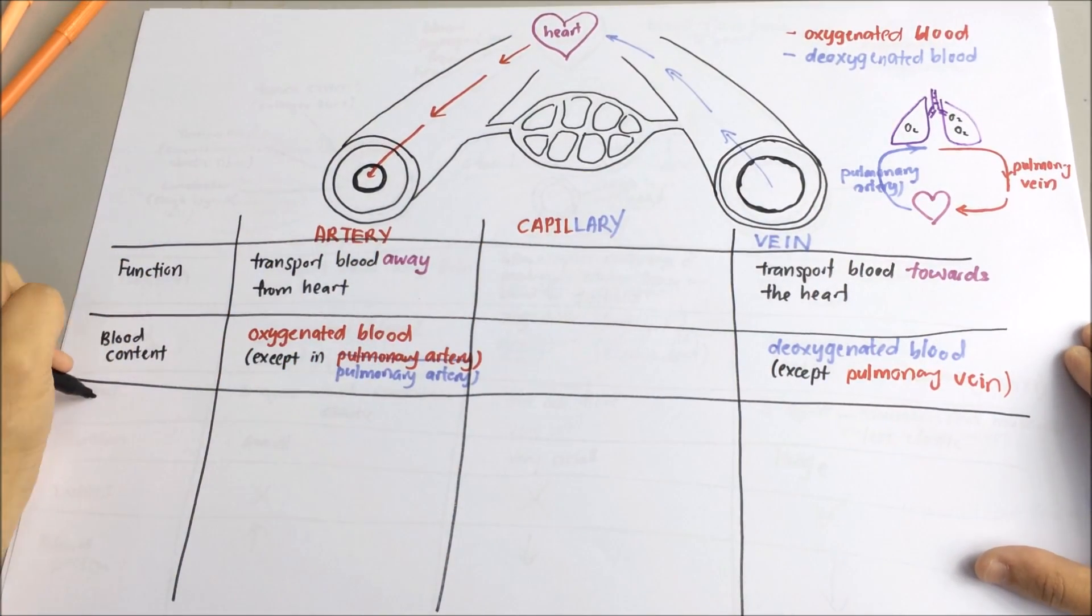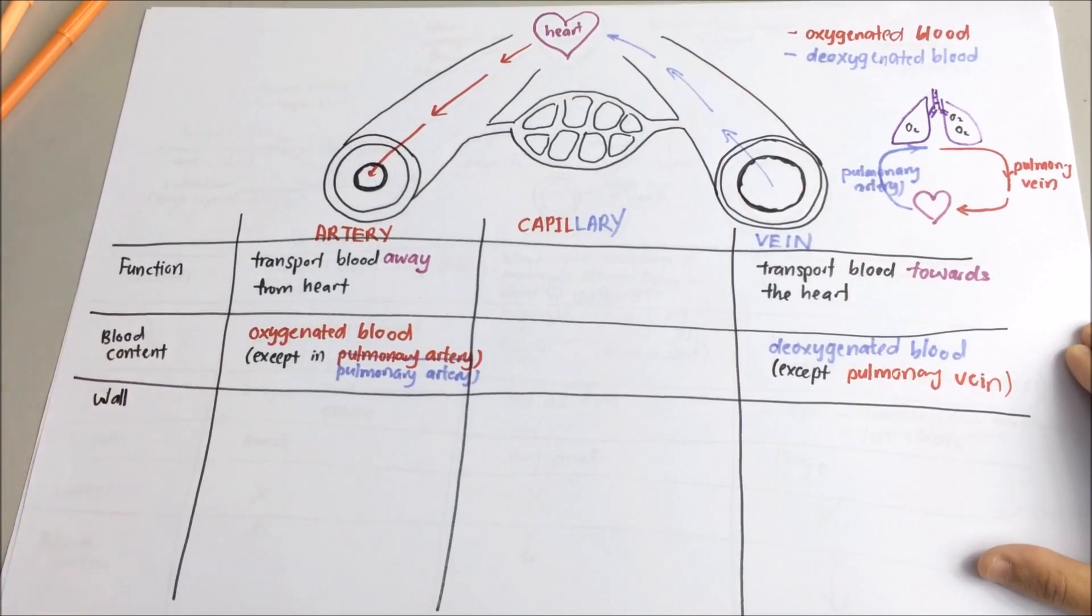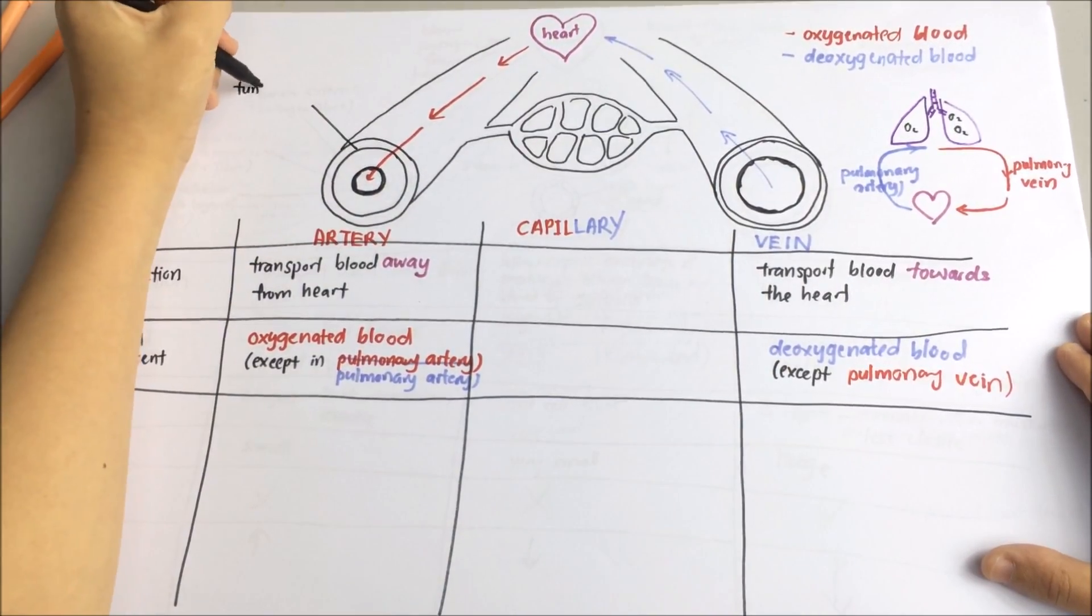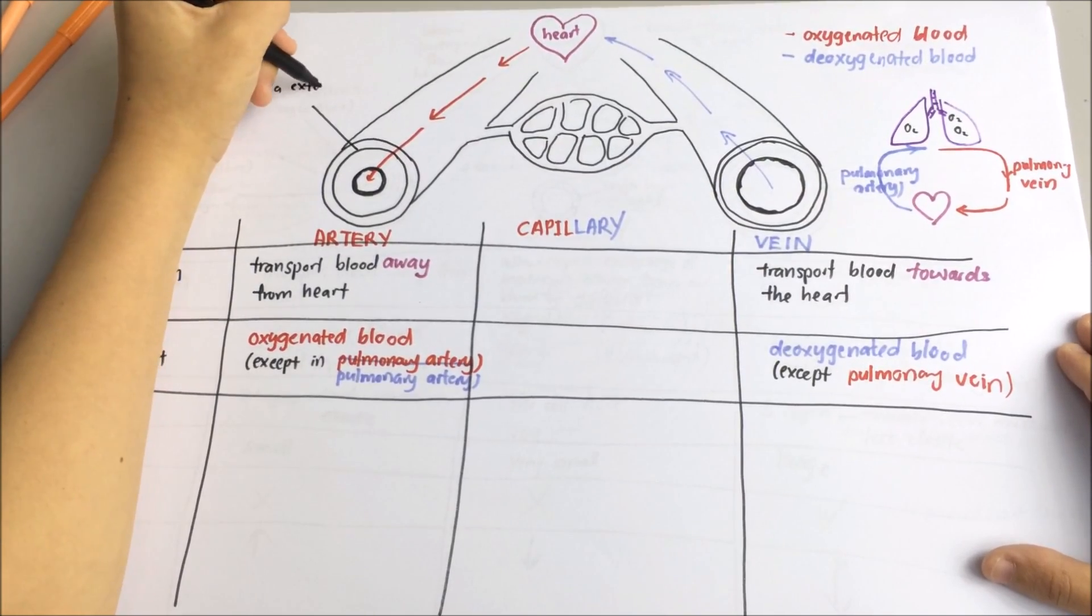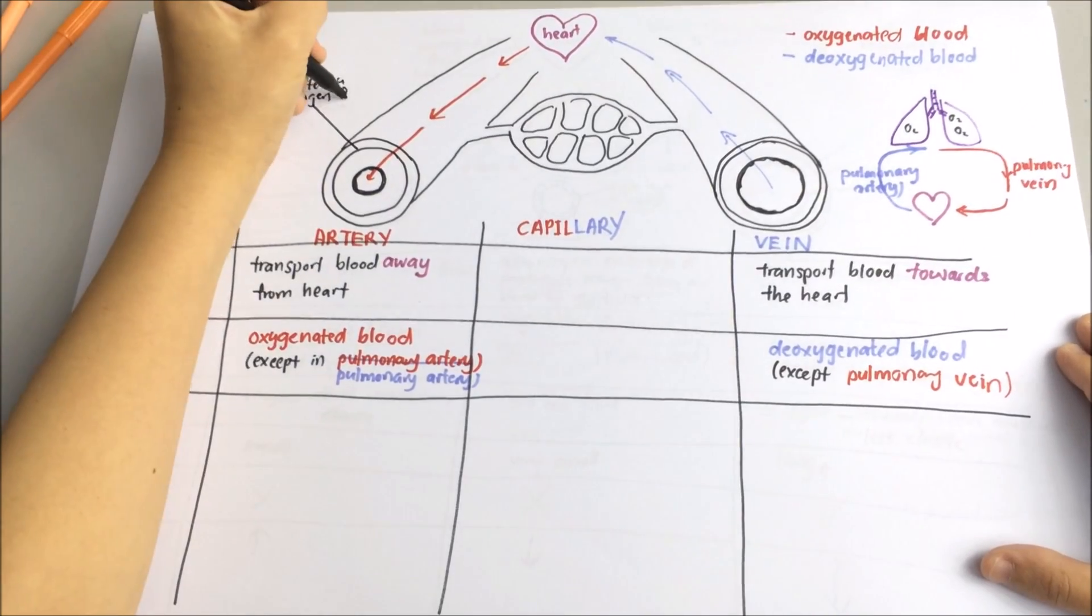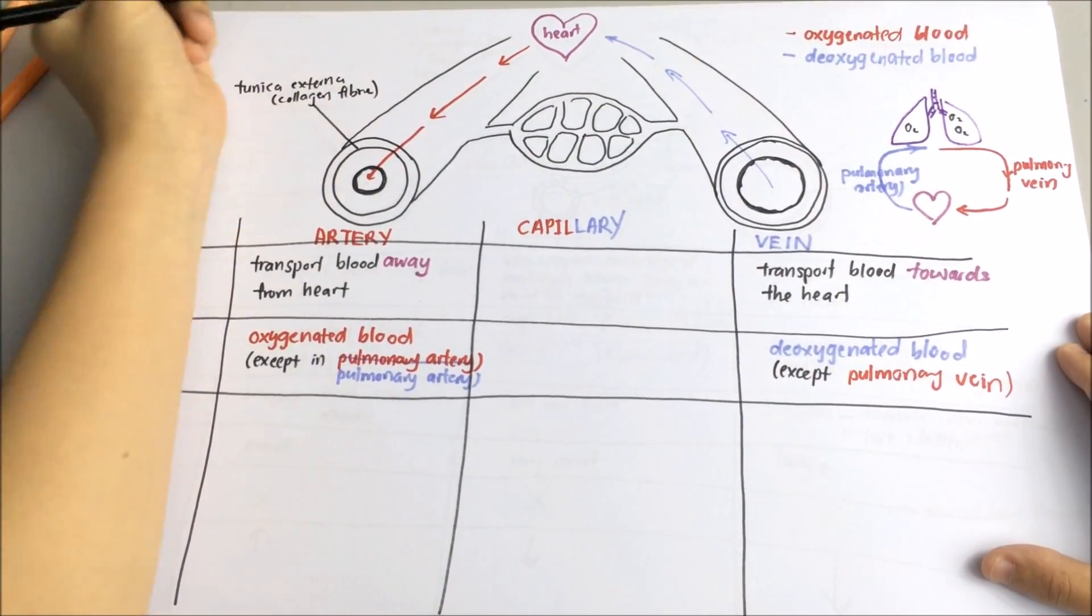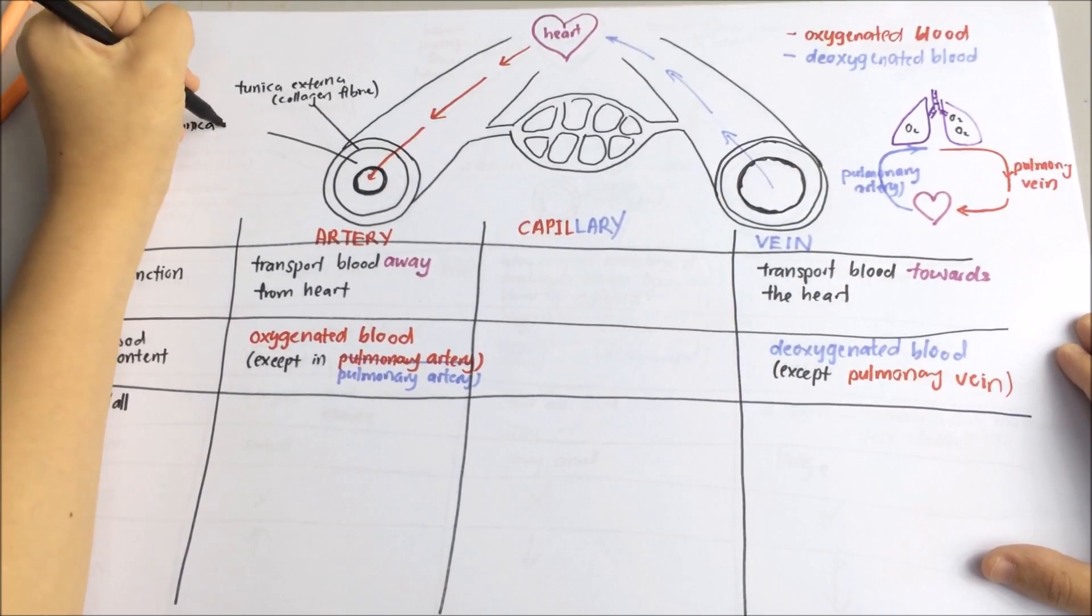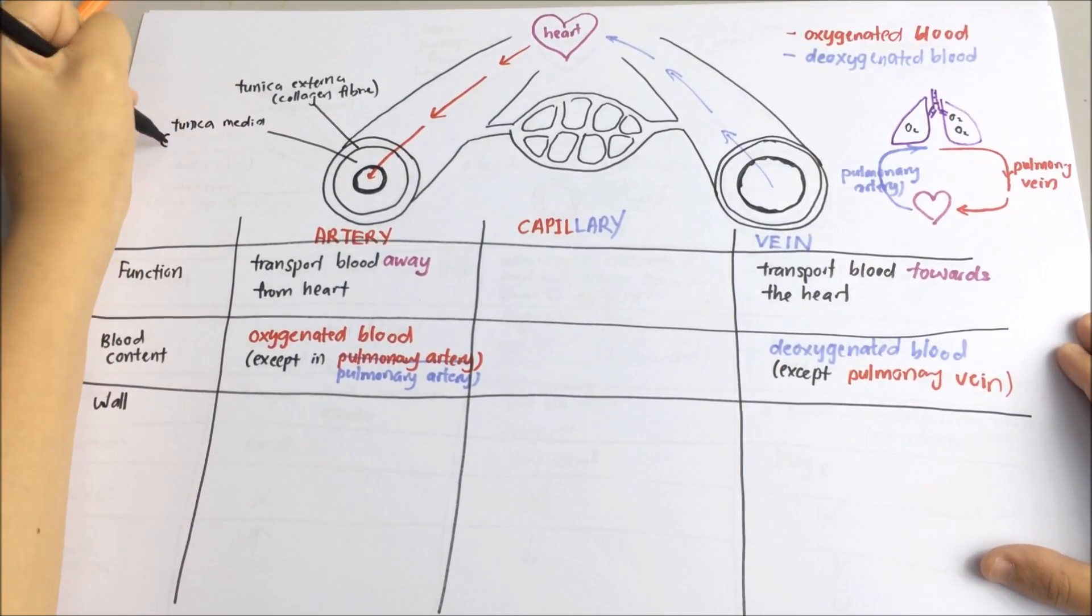Let's compare the wall. The wall of both artery and vein has three layers. The outermost layer is known as tunica externa. It consists of collagen fibers. The middle layer consists of elastic fibers and smooth muscles. And this layer is known as tunica media.